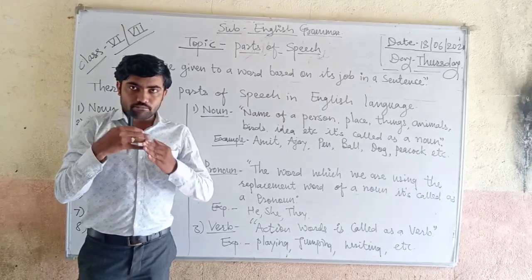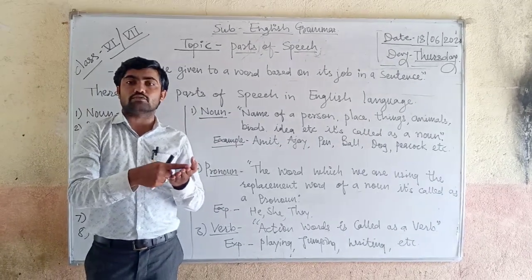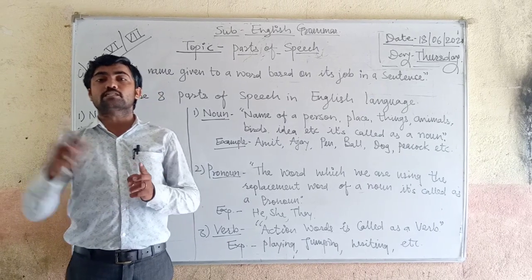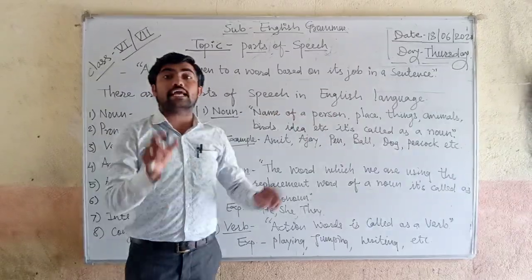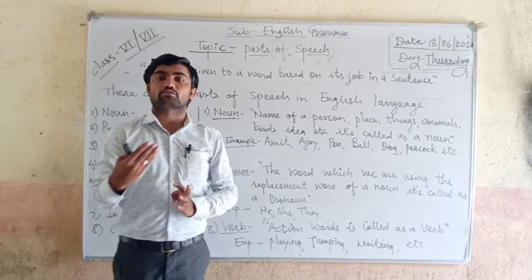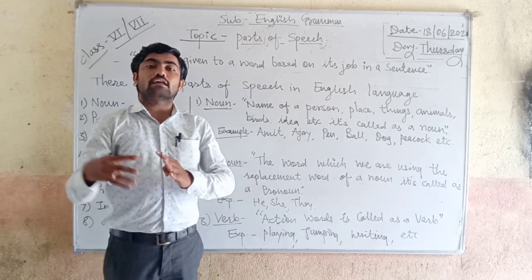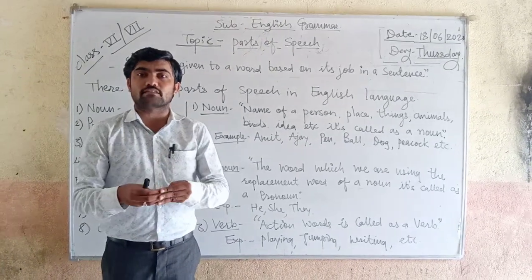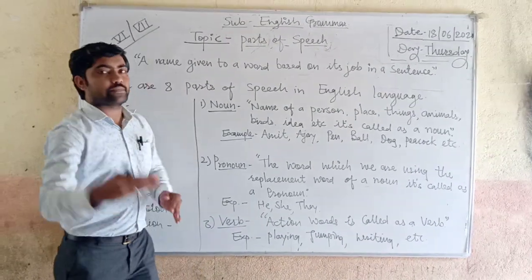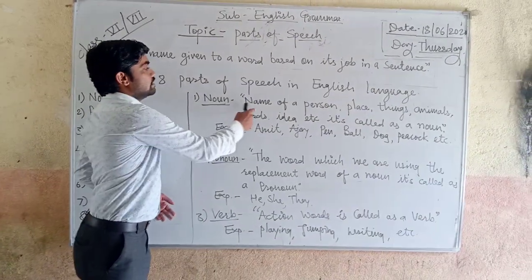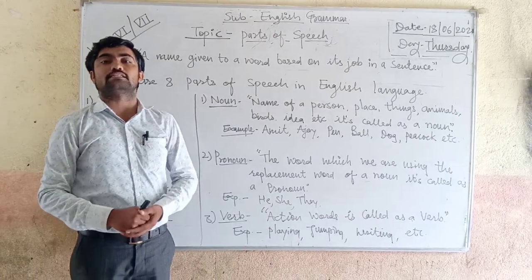The name of your family members — your mom, dad, dog, etc. — everyone has been given a specific name. So this is called the name of a person. The name of a person, place, thing, or animal is called a noun.